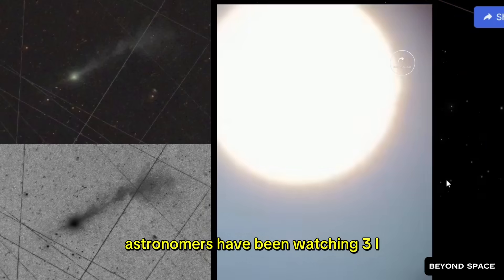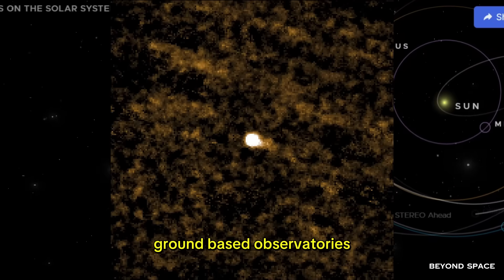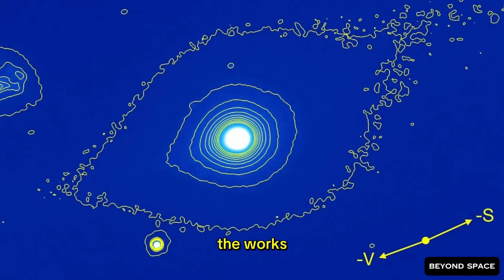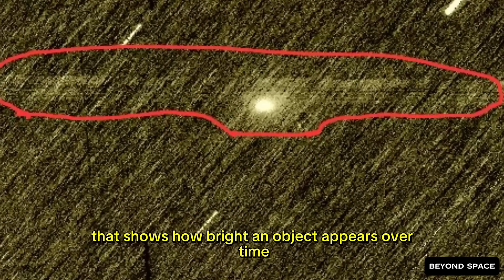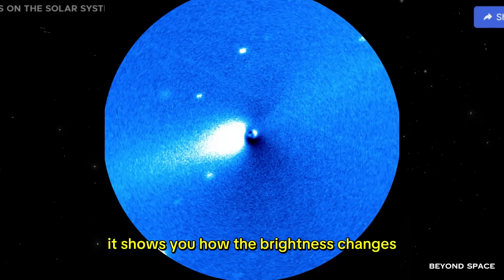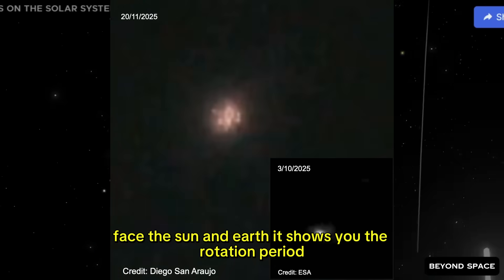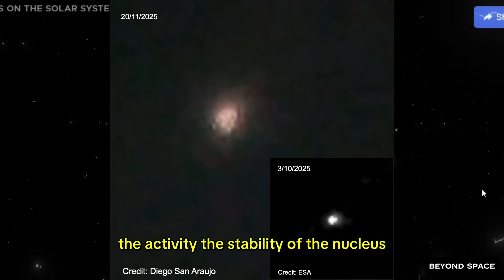For the past several weeks, astronomers have been watching 3i Atlas with every telescope they can point at it. One of the key things they've been tracking is something called the light curve. It's basically a graph that shows how bright an object appears over time. For a comet, especially one that's rotating, the light curve tells you a lot. It shows you how the brightness changes as different parts of the surface face the sun and earth. It shows you the rotation period, gives you clues about the shape, the activity, the stability of the nucleus.